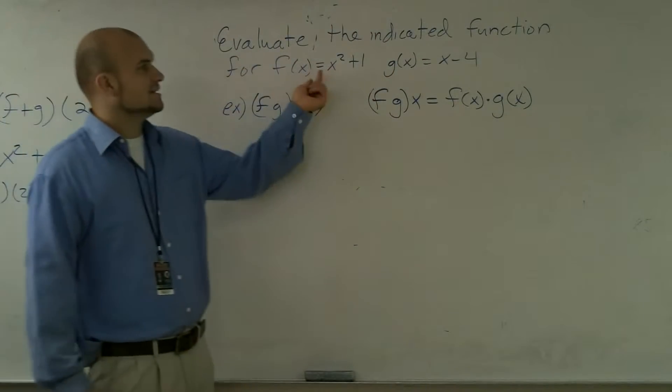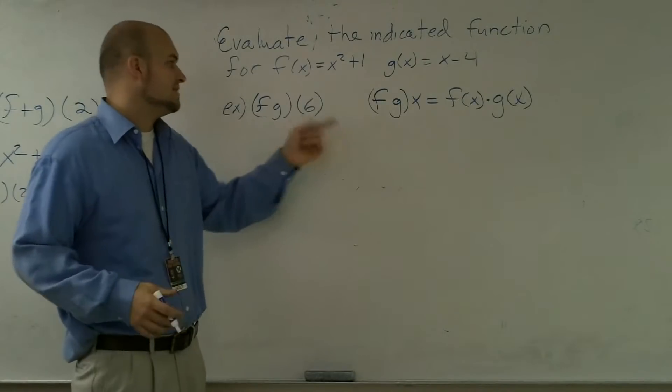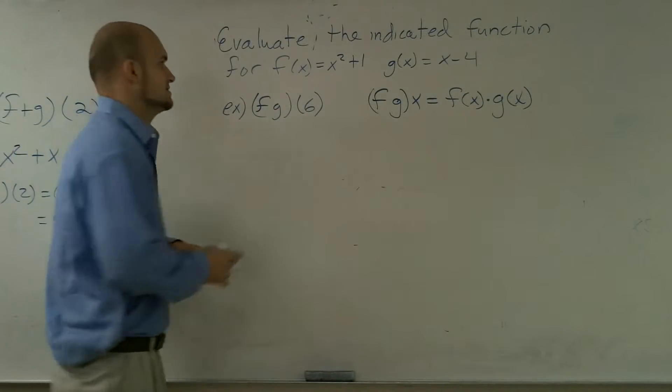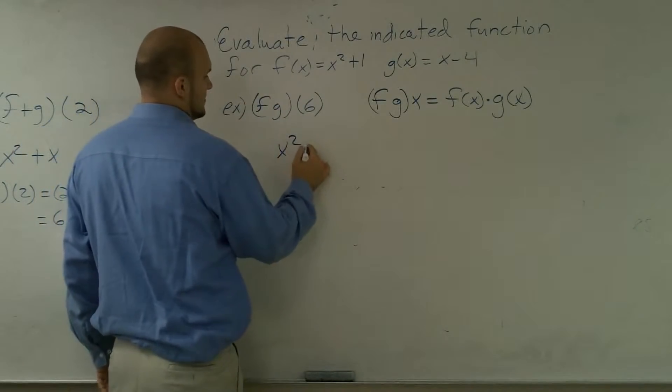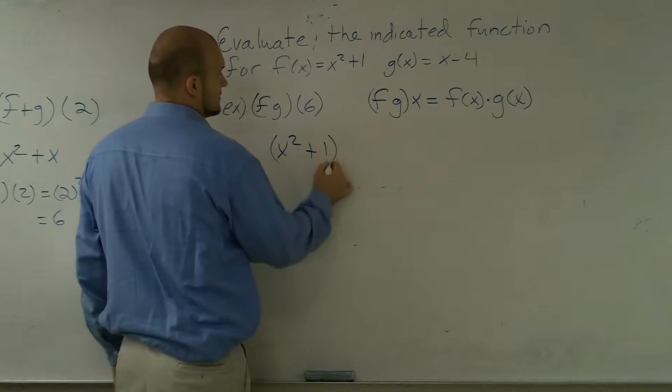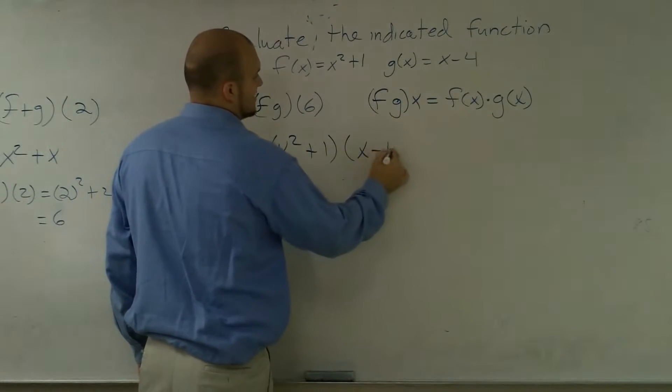So all I'm going to do is take my two functions, multiply them, and then evaluate them for 6. So it's going to be x squared plus 1 times x minus 4.